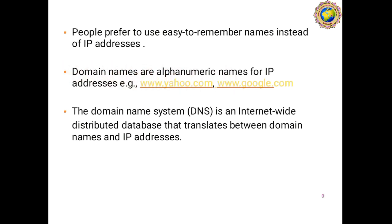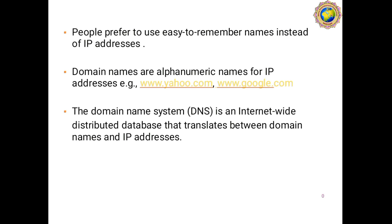Domain names are alphanumeric names for IP addresses. For example, www.yahoo.com and www.google.com are domain names — these are nothing but DNS domain names in alphanumeric form, making them much easier to remember than numerical IP addresses.